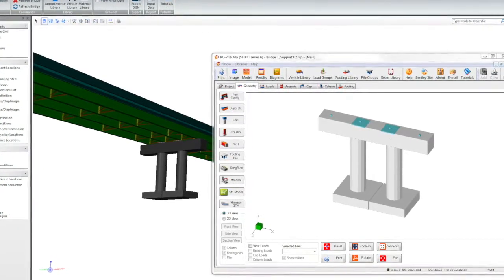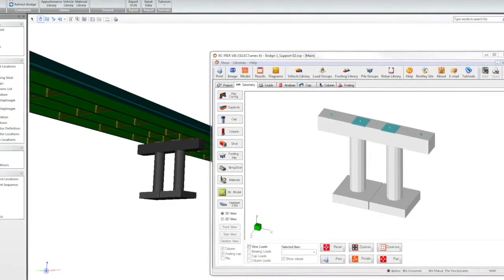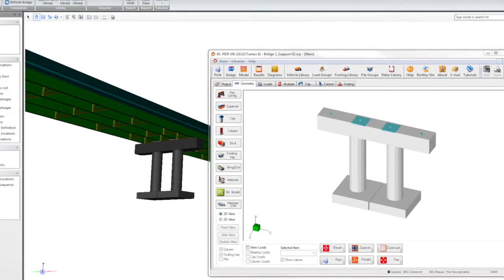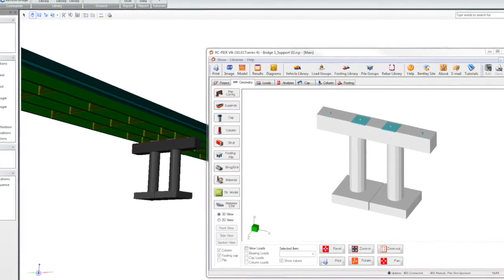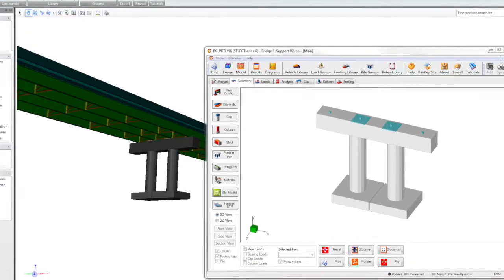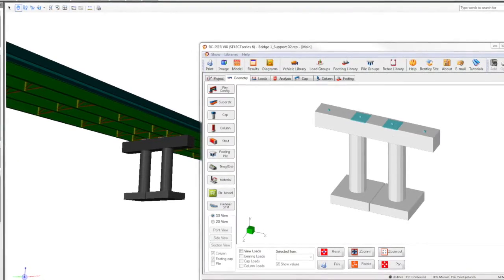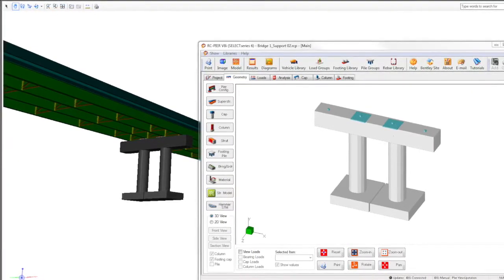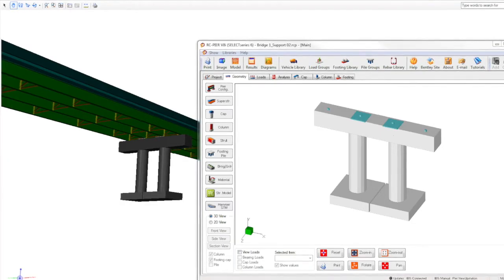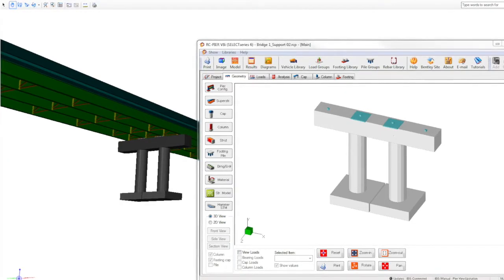This actually brought a much better understanding of how we deal with the dead load camber during the girder erection or during construction. In some provisions this may actually bring some economy to the girder, especially skewed and curved girder bridge design, because the number of cross frames will get reduced as well.